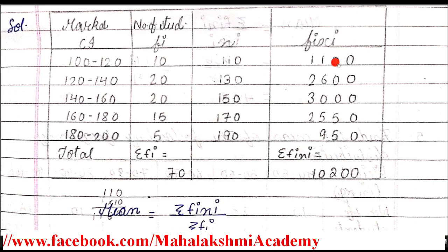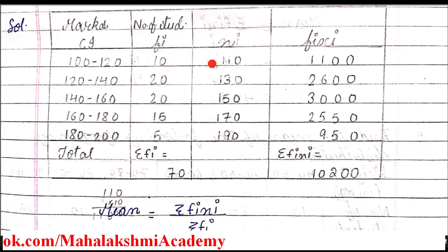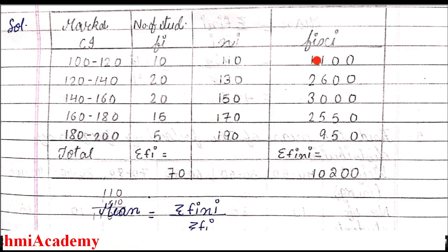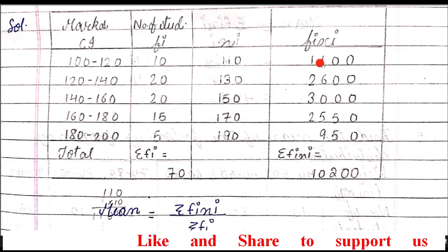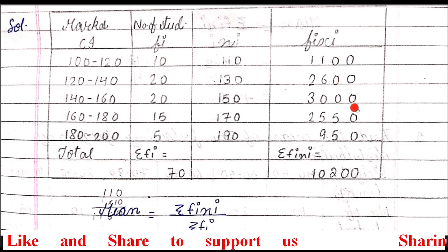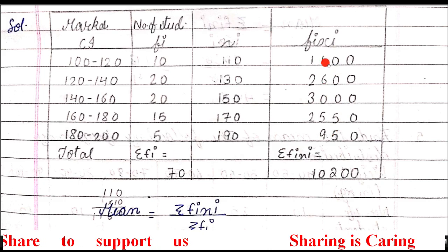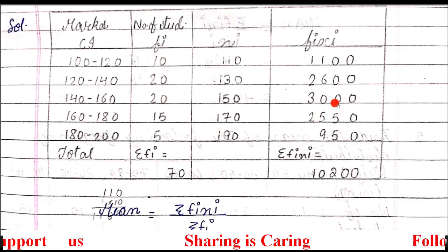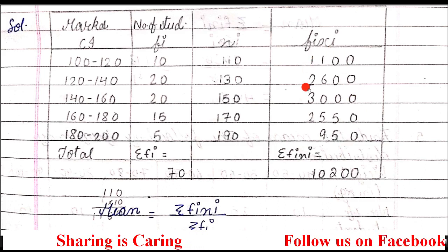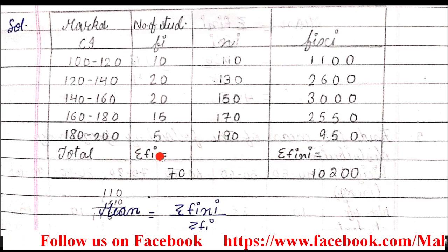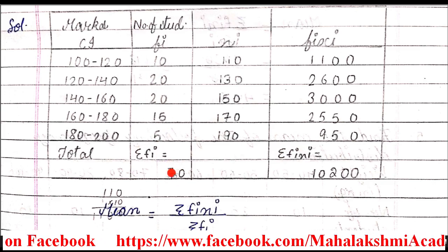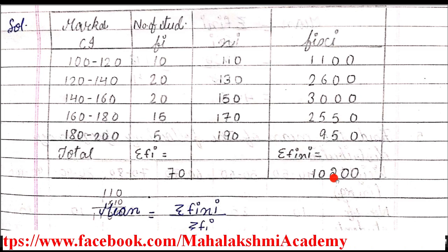When entering the data, as I always mention, write them in an adjusted way so that units column, tens column, hundreds column, and thousands column come under each other for easy addition. After writing, the last row is of total. We need sigma fi and sigma fi·xi. When you add the frequencies, sigma fi gives 70. And adding all fi·xi data gives 10200.